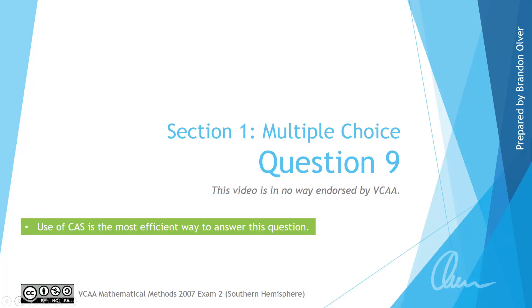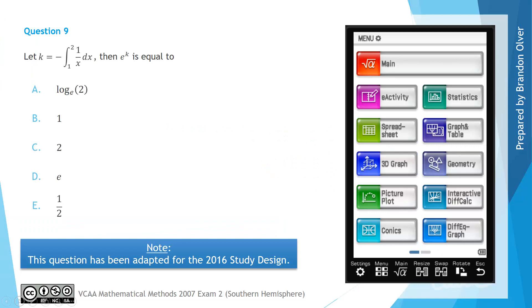So for question 9 we have let k equal negative the integral between 1 and 2 of 1 on x with respect to x. And we are asked if that is the case, then e to the power of k is equal to one of the following options.